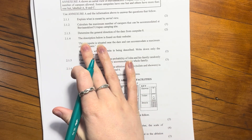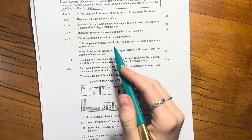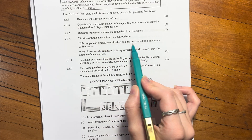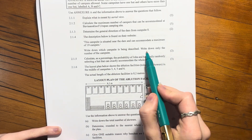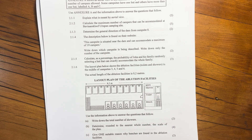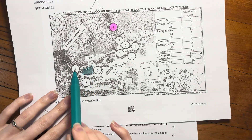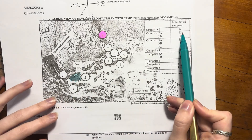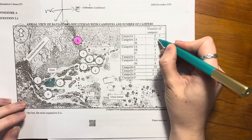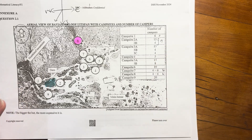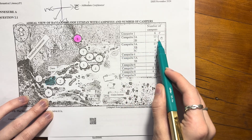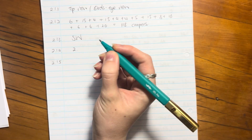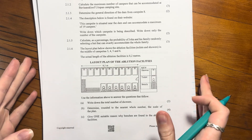Question 2.1.4: The description says a campsite is situated near the dam and can accommodate a maximum of 19 campers. Write down only the campsite number. The dam is near campsites 1, 2, or 9. Campsite 1 only has 6 — too few. Campsite 9 can do 20 — too many. Campsite 2 adds up to 19, so the answer is 2.